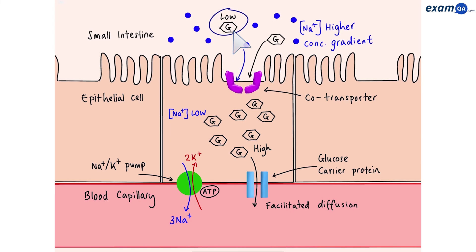Now notice glucose went from low to high concentration. So it moved using active transport. And this was done with the help of a co-transporter. So it did not use ATP directly.